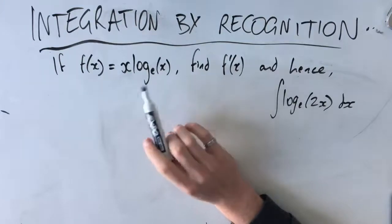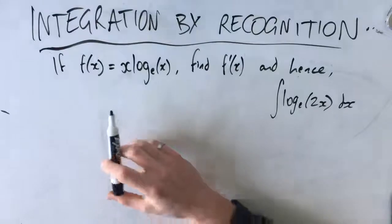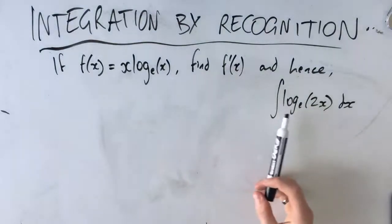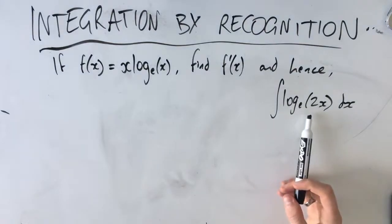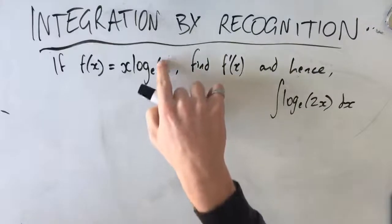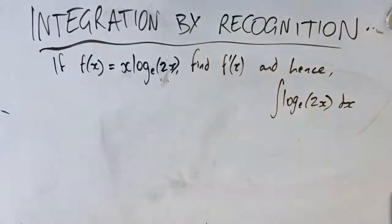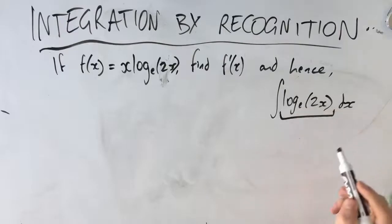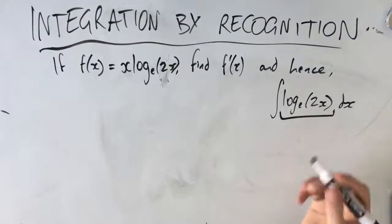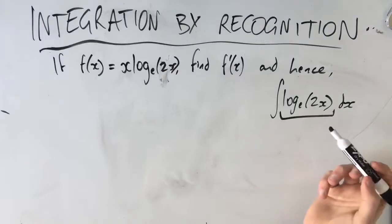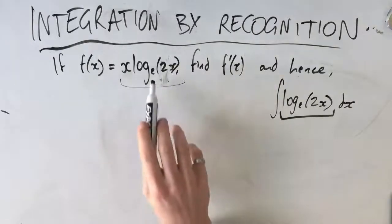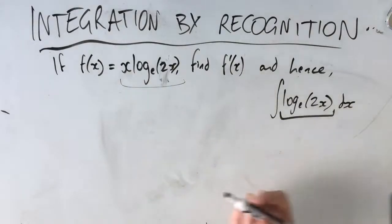I'm going to do two examples today. So we've got: if f(x) equals x·log_e(2x), find f'(x), and hence find the integral or antiderivative of log_e(2x). The reason we do integration by recognition is because we cannot integrate log_e(x) or log_e(2x) directly. As a year 12 methods student, we don't know that antiderivative, so we have to find the derivative first and use that to find the antiderivative.